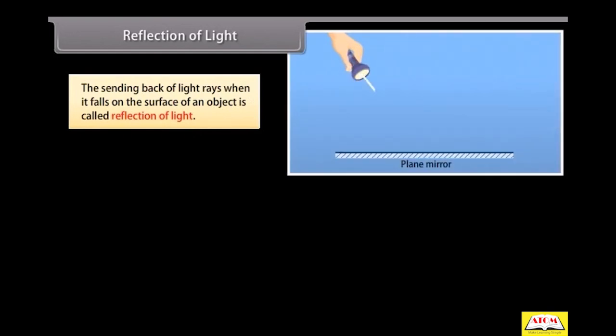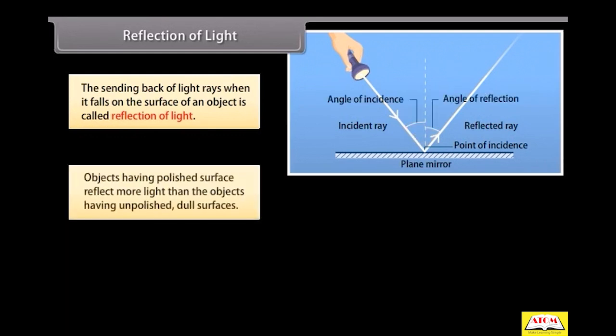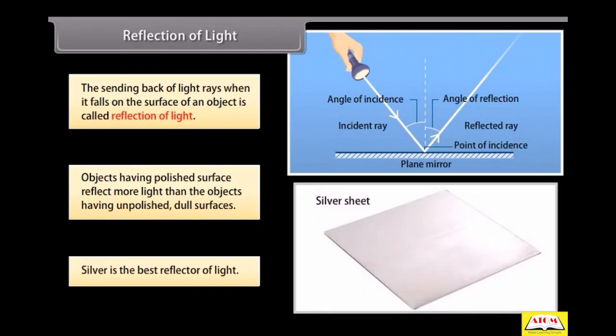Reflection of light. The sending back of light rays when it falls on the surface of an object is called reflection of light. Objects having polished surfaces reflect more light than objects having unpolished dull surfaces. Silver is the best reflector of light.